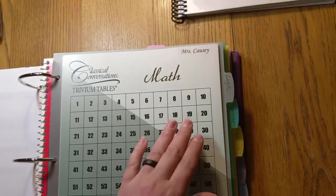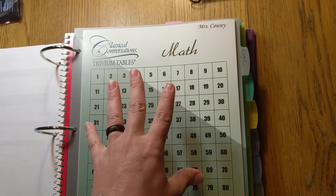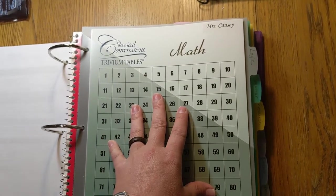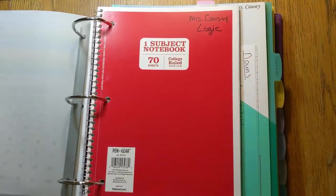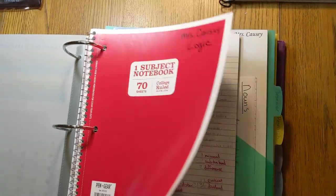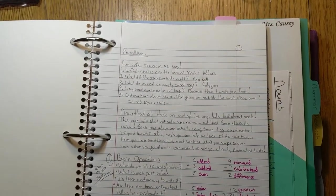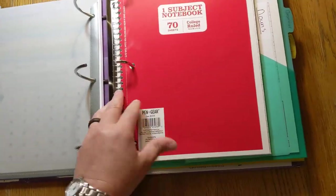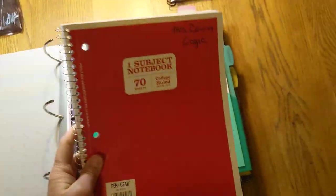So my logic tab has a math trivium table in it. I asked all my parents to get the math and the Latin. I'm going to try to use those in class a lot so that then the students will know how to use them at home for their homework. And then I have in every one of my strands I have a one-subject notebook, because that is how I'm going to do all of my lesson planning.